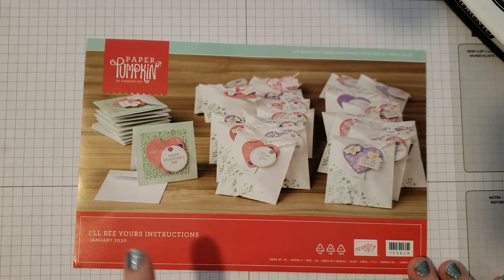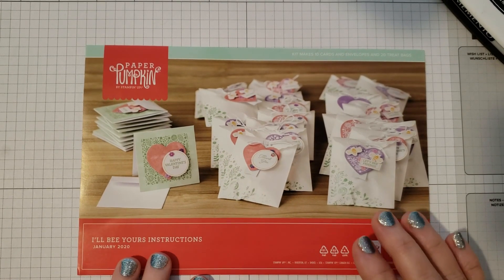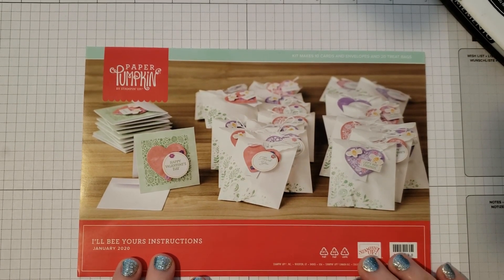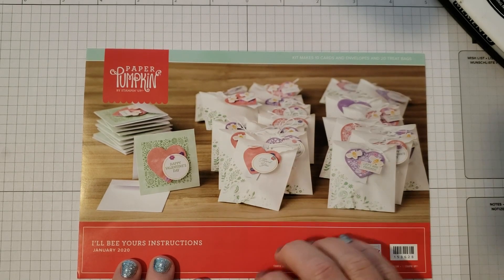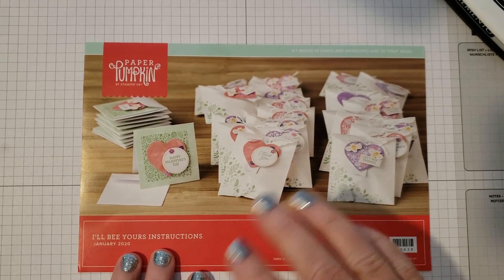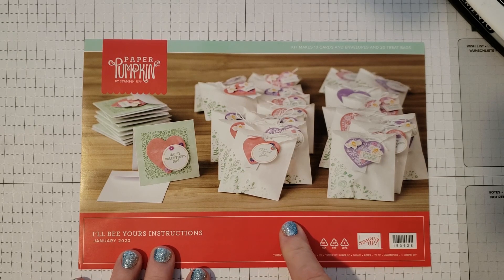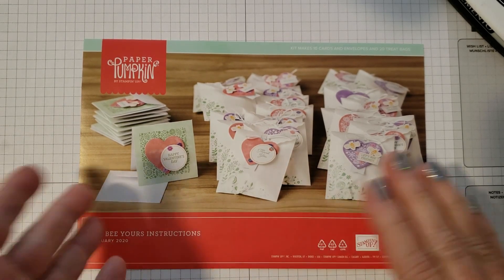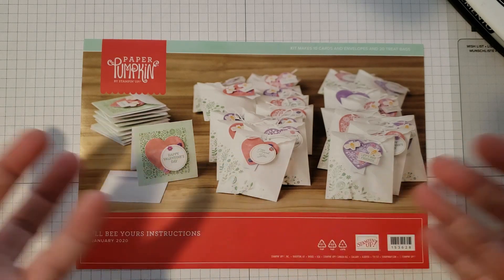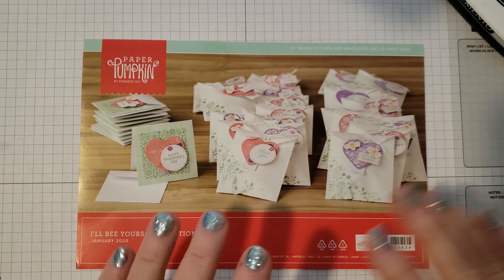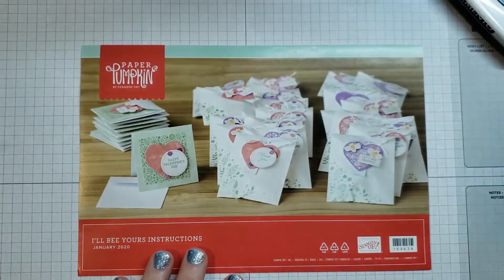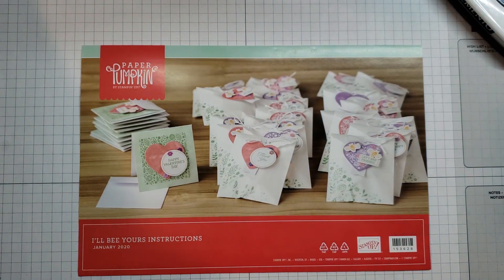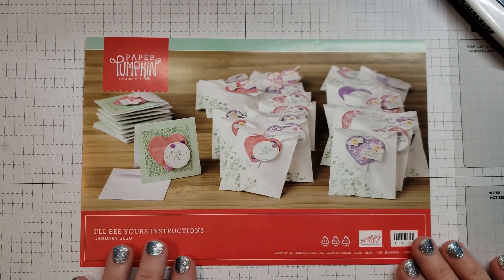If you're not familiar with Paper Pumpkin, let me explain. It's a kit that shows up in your mailbox every month. It always includes all the supplies as well as instructions to make some fun projects. You get a stamp set and an ink spot you get to keep, and usually there's leftover bits and bobs from the kit that you can also utilize going forward.